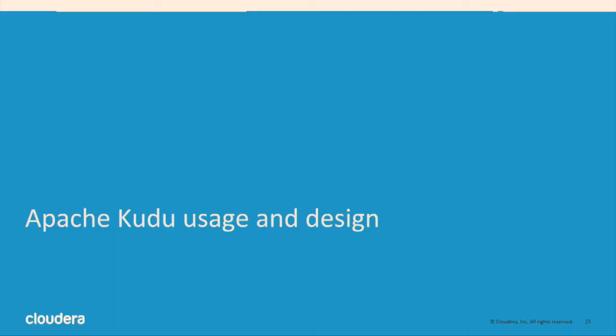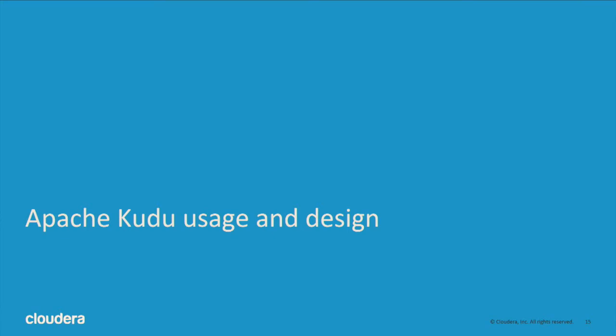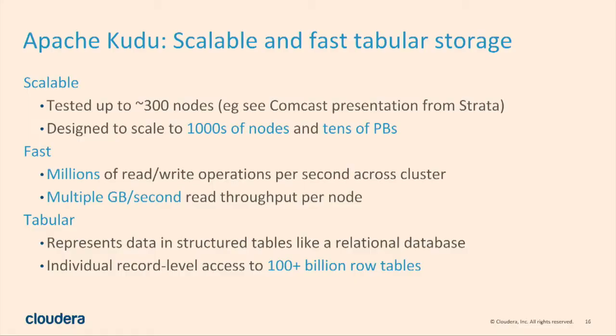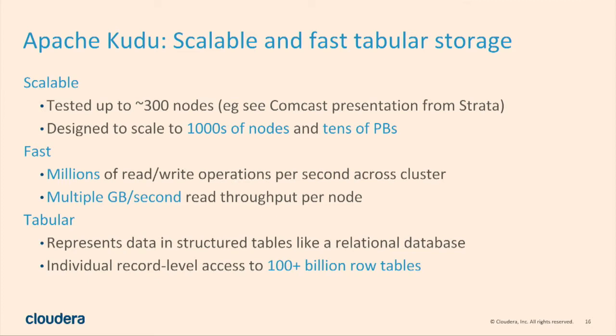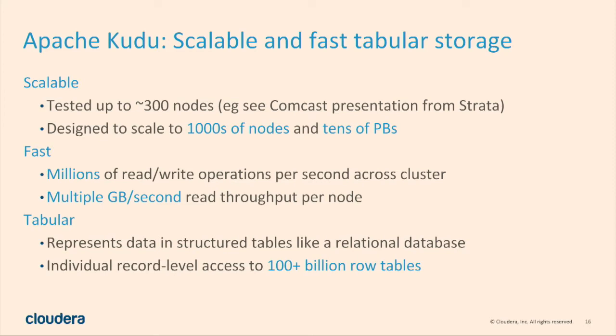Now back to Kudu's implementation details. Our elevator pitch is that it's scalable, fast, and fault-tolerant tabular storage. For scalability, we've tested around 300 nodes — Comcast gave a presentation at Strata about their 300–400 node cluster. The architecture is designed to scale into thousands of nodes with tens of petabytes of data. There's no doubt we will get there in the next couple of years.